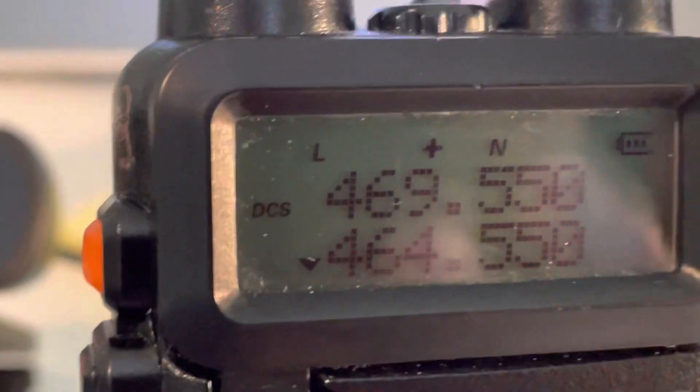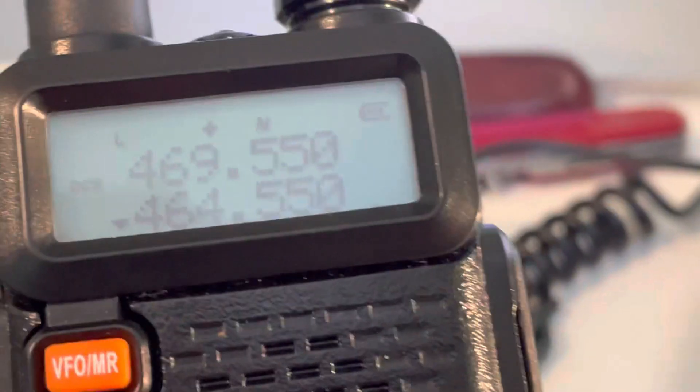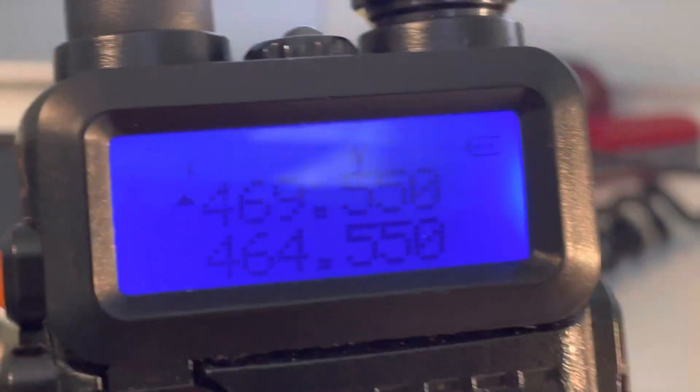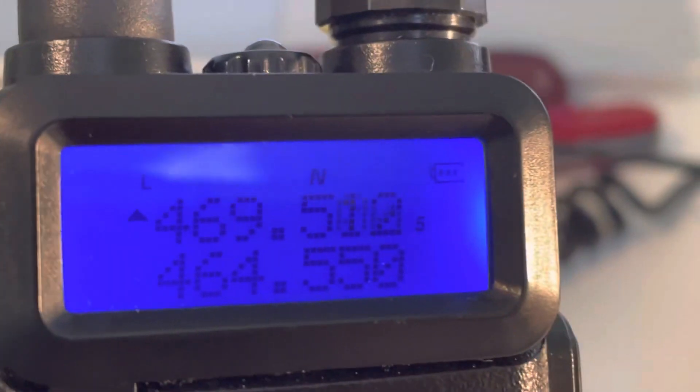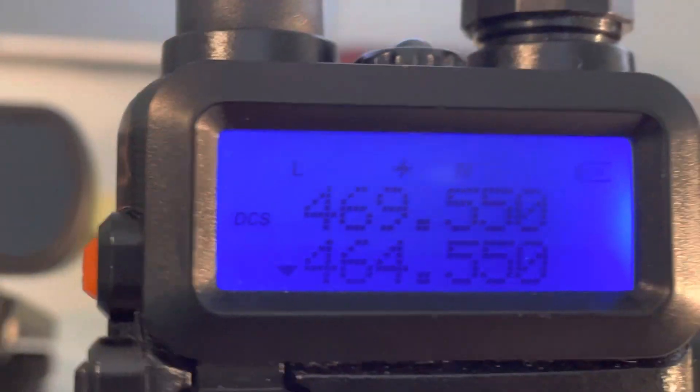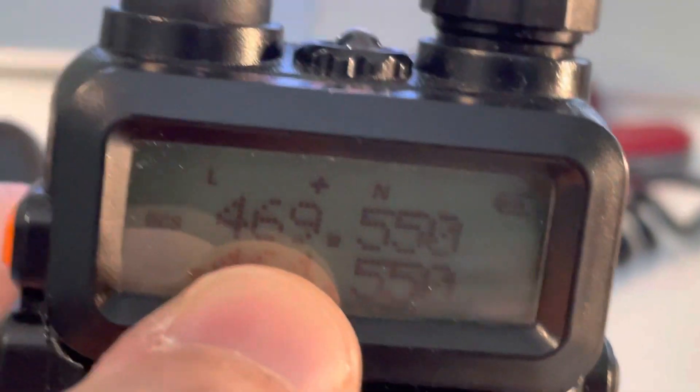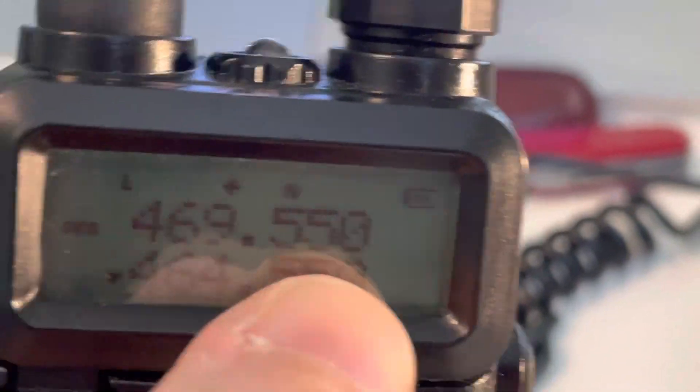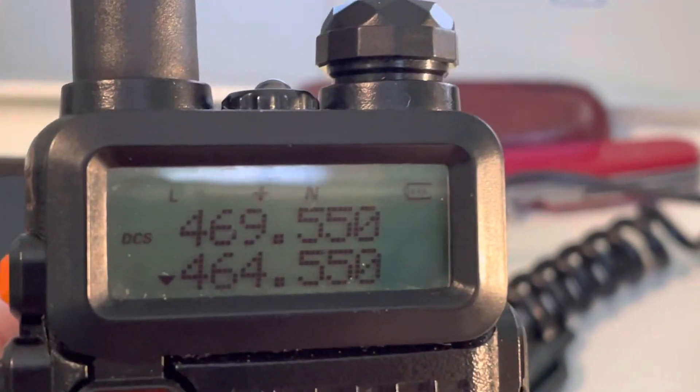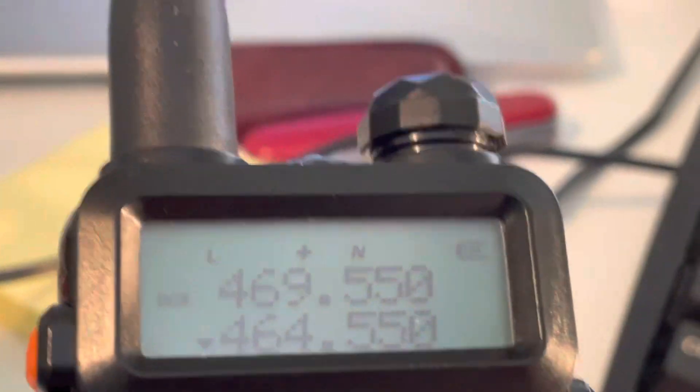Now, if you run a repeater on any of these four frequencies, or these four pairs, I should say, you have to accept the fact that there may be somebody else, and if you're in a large urban area, there probably is somebody else, not only using the output frequency for simplex operations, but also the input frequency. And you don't have interference protection against that like you do with a normal business radio license.